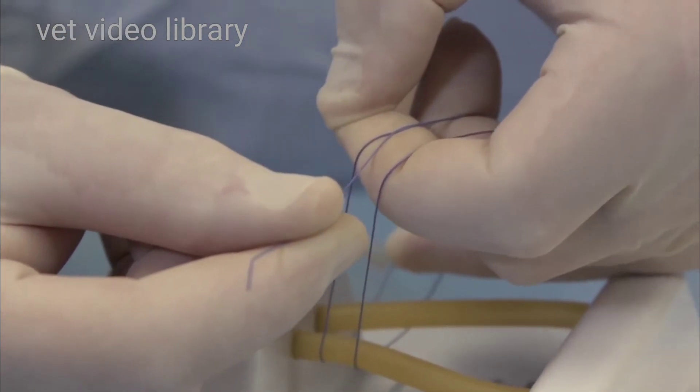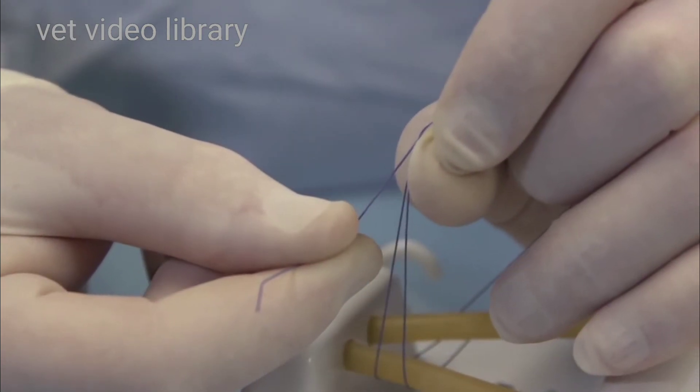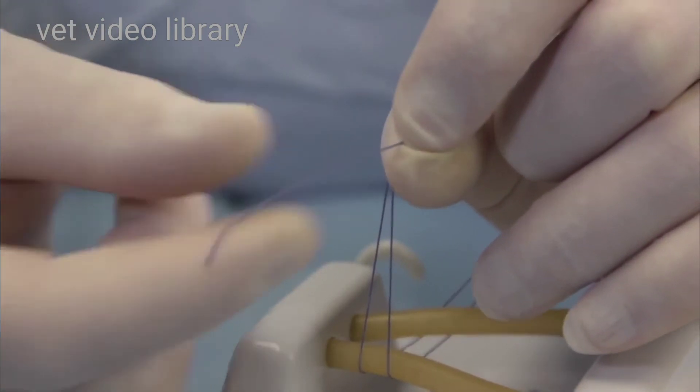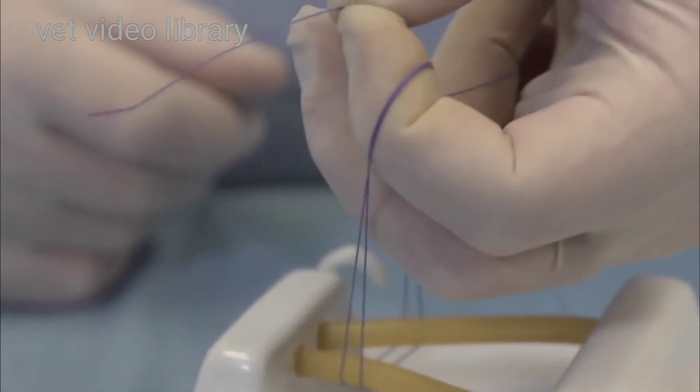I'm going to flip everything from my index finger onto my thumb like that. I'm going to take this loose end, I'm going to pinch it between my thumb and my finger. I'm going to pull it through like that.